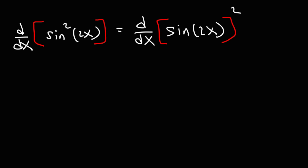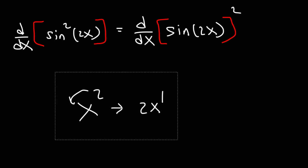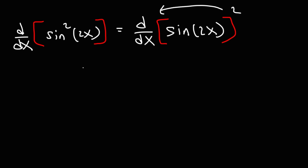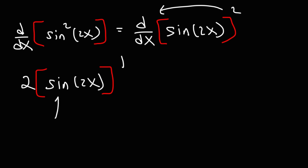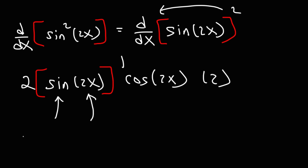In order to differentiate that expression, we need to work with the outside function, more specifically the exponent. When you differentiate x squared, it becomes 2x to the first power. We're going to do something similar here — move the 2 to the front, keep the inside part the same and rewrite sine of 2x, then subtract the exponent by 1 (2 minus 1 is 1). Next, the derivative of sine is cosine, and the derivative of 2x is 2. So the final answer is 4 sine 2x cosine 2x.